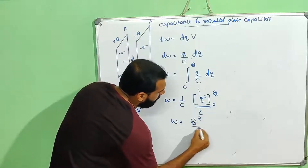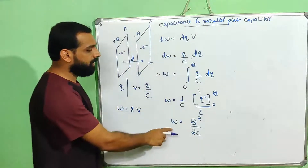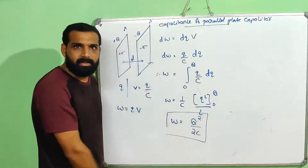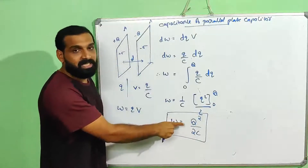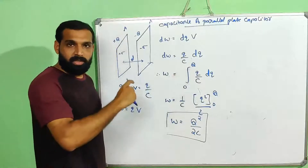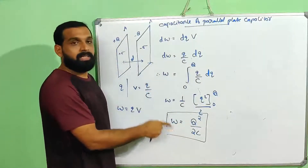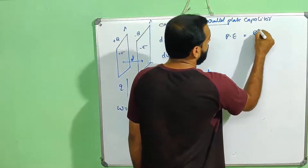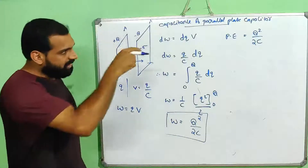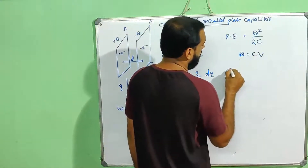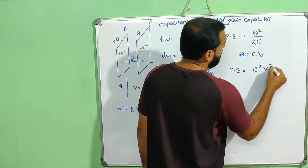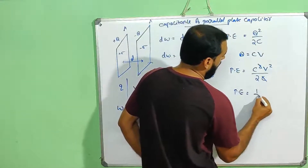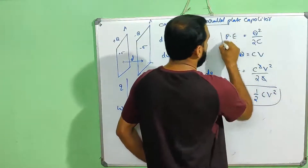Integrating, total work done W equal to Q squared by 2C. This is the expression for energy stored in a capacitor. The work done in charging the capacitor to Q is stored as potential energy. Potential energy stored in the capacitor equals Q squared by 2C. Since Q equal to CV, potential energy also equals half CV squared. Here are the two expressions for energy stored in a capacitor.